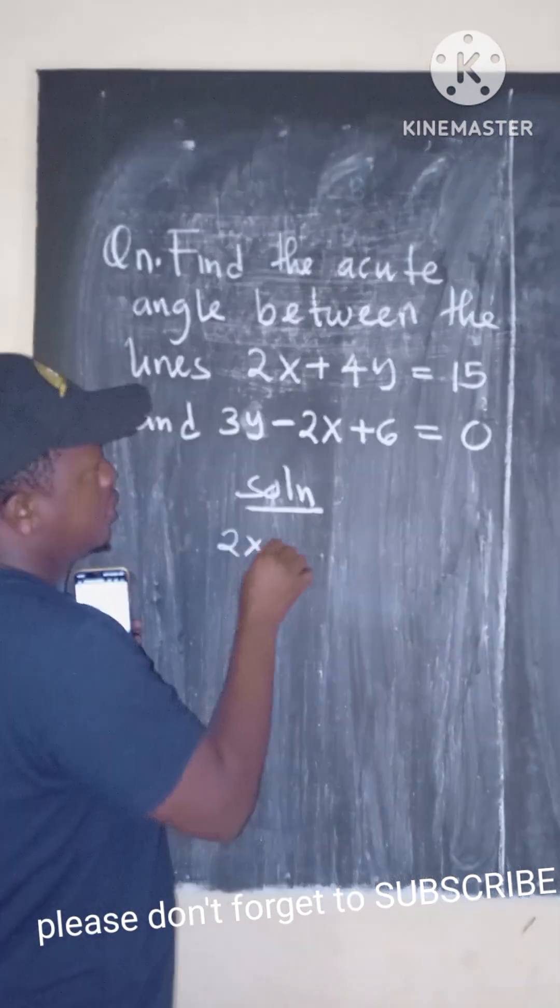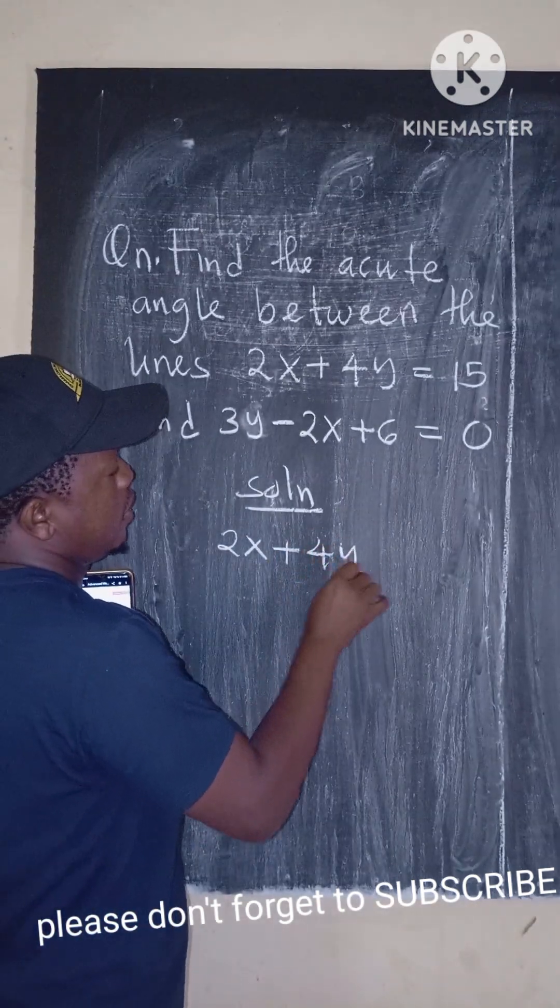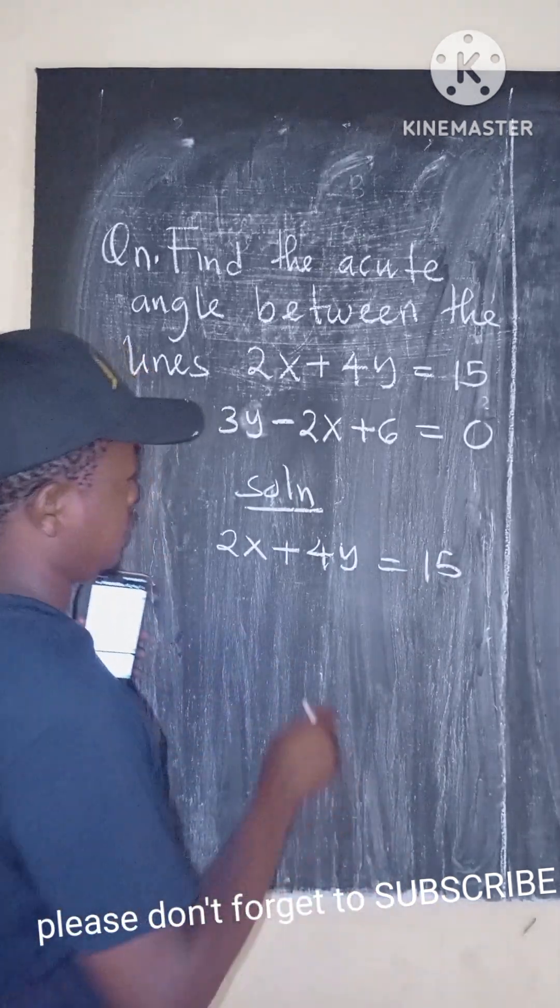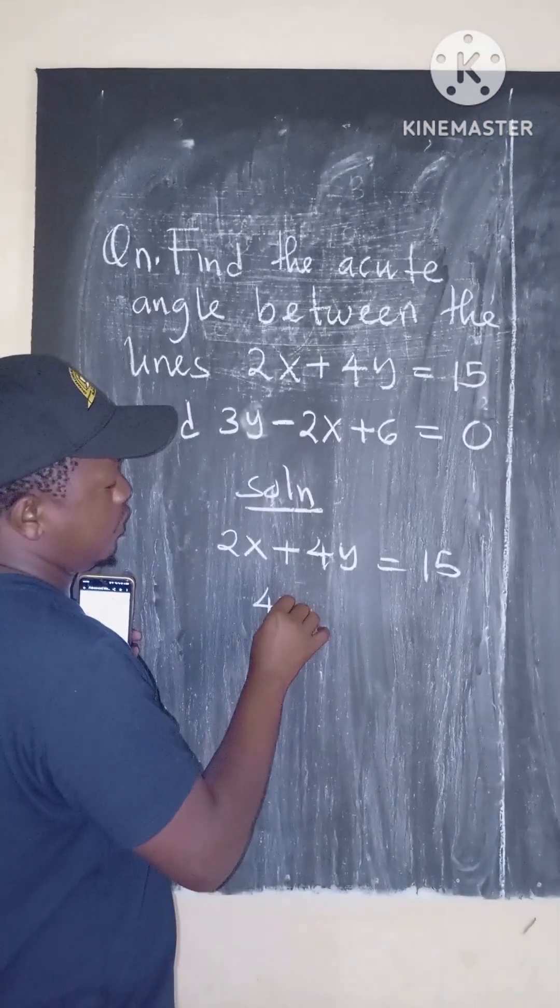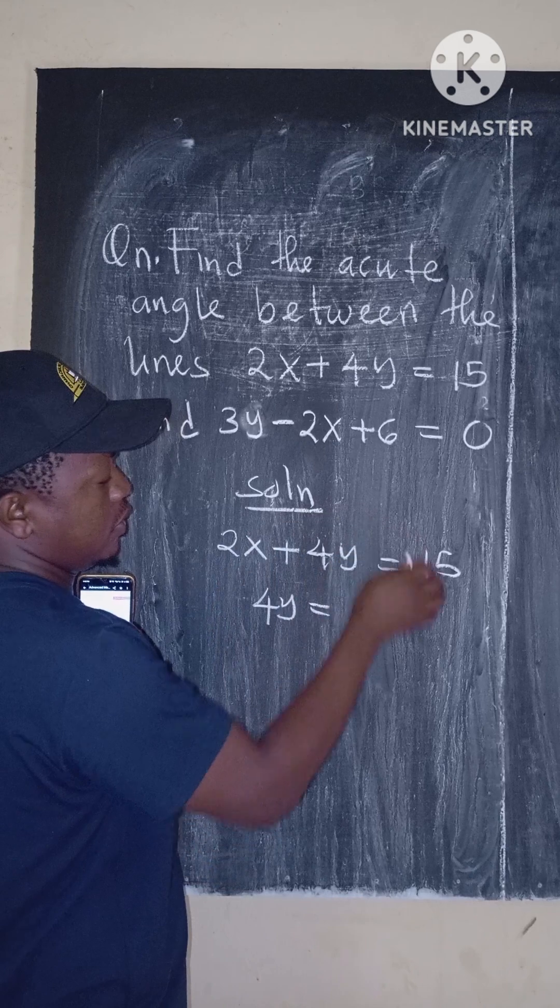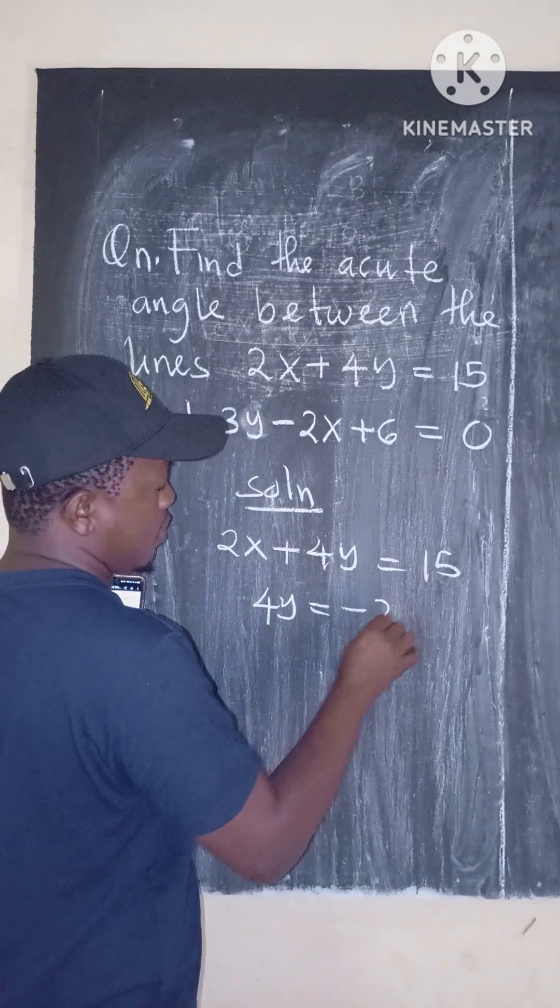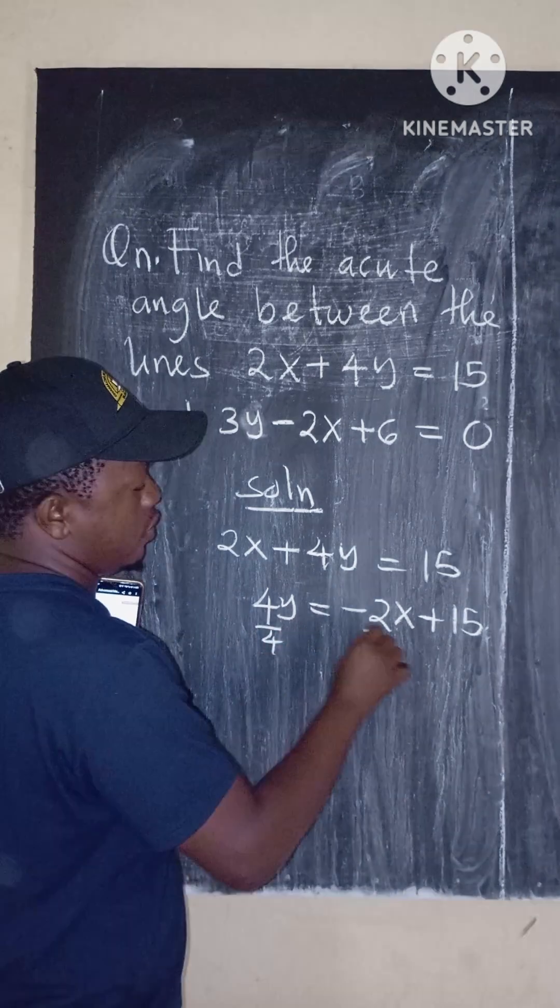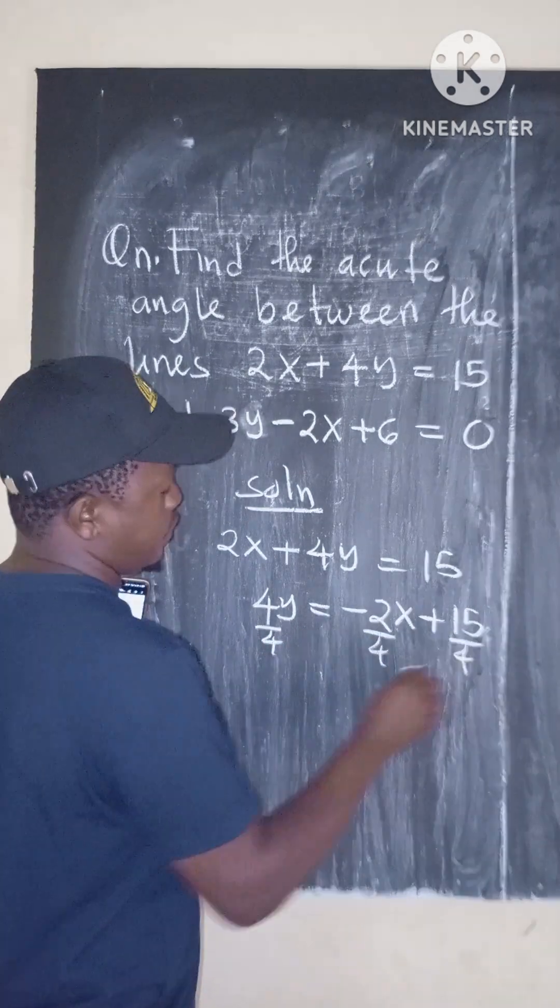We have 2x plus 4y equals 15. Make y the subject. So we have 4y equals negative 2x plus 15. Then we divide by 4.